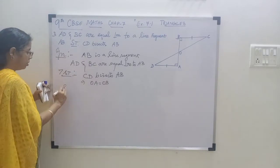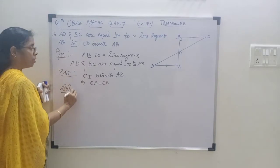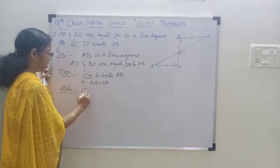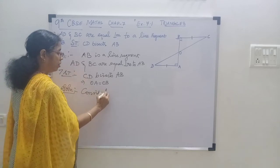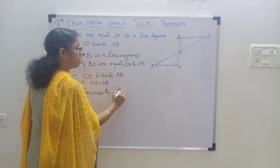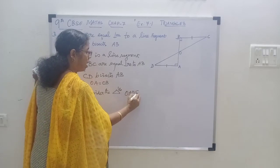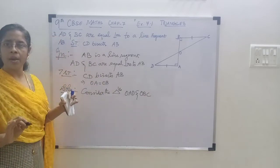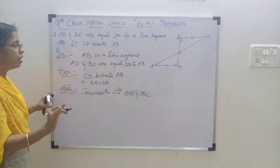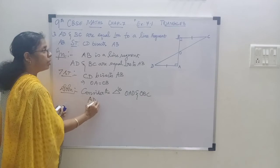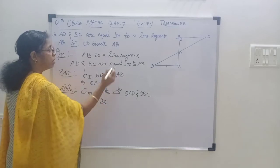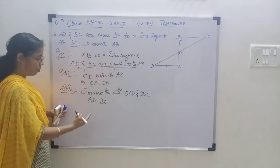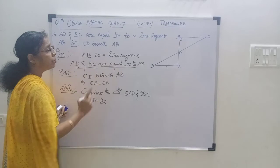Now let's prove. See the solution. Here we are going to consider the two right angle triangles. Consider the triangles OAD and OBC, in which AD equal to BC, because they are the equal perpendiculars. AD and BC are the equal perpendiculars, so AD equal to BC.